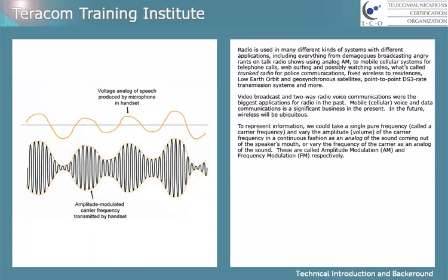To represent information, we could take a single pure frequency called a carrier frequency, and vary the amplitude — that's the volume — of the carrier frequency in a continuous fashion as an analog of the strength of the sound pressure waves coming out of the speaker's mouth. Or we could vary the frequency of the carrier as an analog of the sound. These are called amplitude modulation AM and frequency modulation FM, respectively.